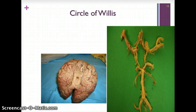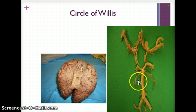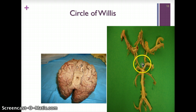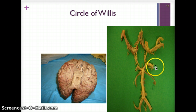The circle of Willis is the brain's main arterial system. If you flip the brain over, you can see the circular structure around the base of the brain. All of the blood that goes to the brain flows through the circle of Willis first, and then it branches off into the sides. Blockage in one of the arteries in the brain can cause brain damage.